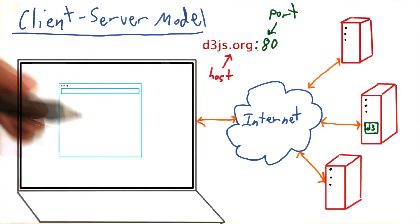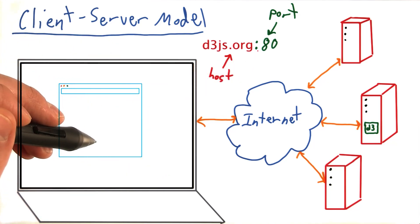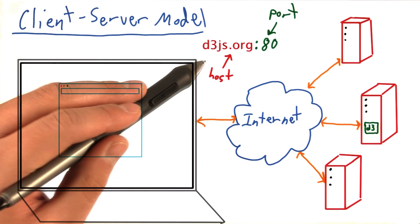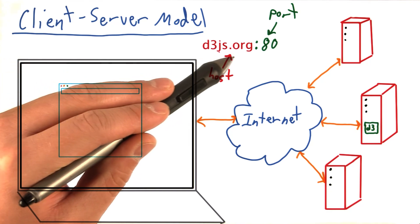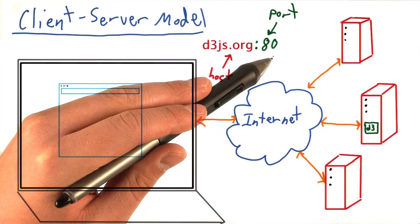So in this case, in the analogy of the really old days where we're sending a letter, we would say send the letter to address d3js.org, room number 80.